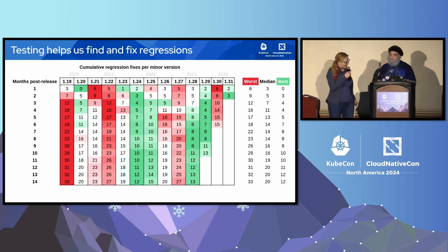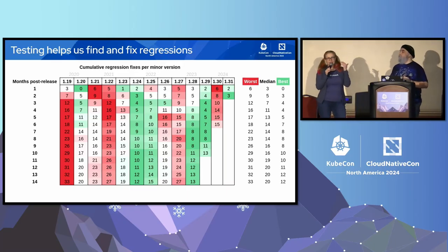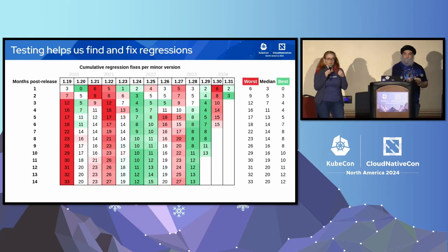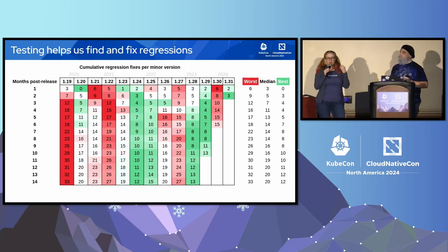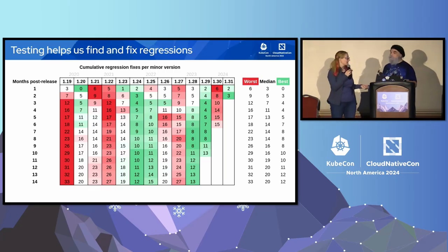To clarify: as every Kubernetes release goes on, patch releases come out over the year that a release is being supported. If there's a regression in a patch release, that means everyone who thought everything was okay with that version of Kubernetes suddenly has something break that they weren't expecting. That's not something we want to do.